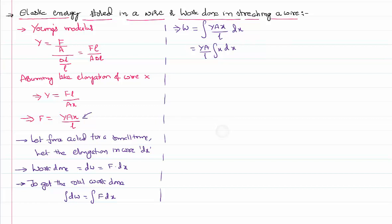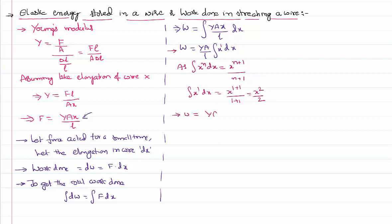Using the integration formula — the integral of x to the power n dx equals x to the power n+1 divided by n+1 — we have the integral of x¹ dx, which gives x² divided by 2. Taking this into consideration, the work done W equals Y times A divided by L, times x² over 2. This work done is stored within the wire, since energy cannot disappear according to the law of conservation of energy. Thus this work done is also called the energy stored in a wire.